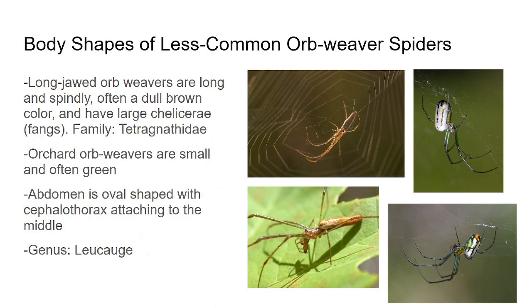Lastly, these are some less common orb weavers that you might run into — they're called the Tetragnathidae, the family of the long-jawed orb weavers. If you can see the spider on the bottom left, you can see how its fangs look really long — abnormally so — and that's where they get their name. They're technically in a different family from Araneidae, which is why it's a little complicated, as not all orb weavers fit neatly into one family. On the right side, we've got the Orchard orb weavers from the genus Leucauge. They are also technically long-jawed orb weavers, though they look very unique — usually a shade of green, with skinny legs and different body positions — but you can still find them in those cool orb webs.